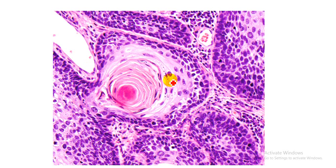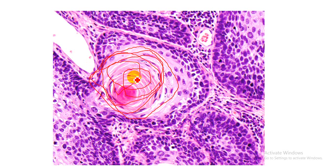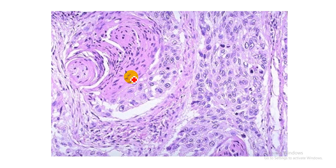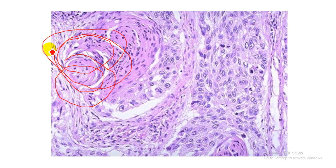Here you can see a keratin pearl — the formation of a keratin ball made up of keratin and tumor cells. Keratin pearls are seen in the well-differentiated, highly differentiated form of squamous cell carcinoma. Intercellular bridges and keratin pearls are the most important features of squamous cell carcinoma.